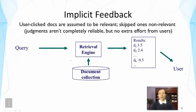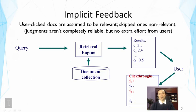Pseudo relevance feedback is completely unreliable — we have to arbitrarily set a cutoff. So there is also something in between called implicit feedback. In this case, we do involve users, but we don't ask them to make explicit judgments. Instead, we observe how the user interacts with the search results. We look at the click-throughs: the user clicked on this one, viewed this one, skipped this one, and viewed this one again. This is a clue about whether a document is useful to the user.